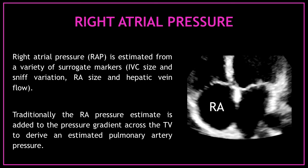The second parameter we need is the right atrial pressure. The right atrial pressure is estimated from a variety of surrogate markers, like the inferior vena cava size and sniff variation, the right atrial size, and the hepatic vein flow. Traditionally, the right atrial pressure estimate is added to the pressure gradient across the tricuspid valve to derive an estimated pulmonary artery pressure.